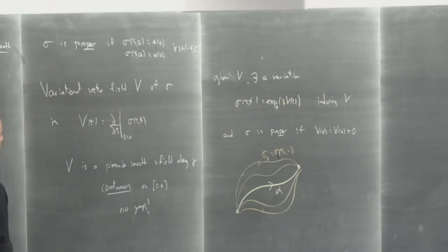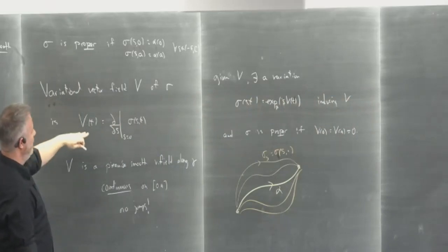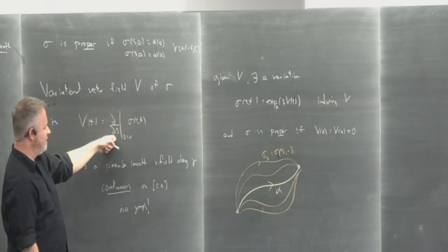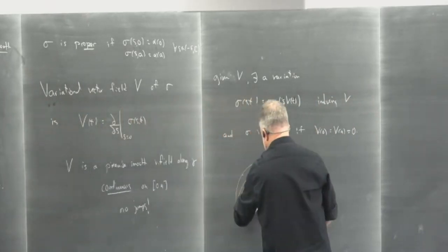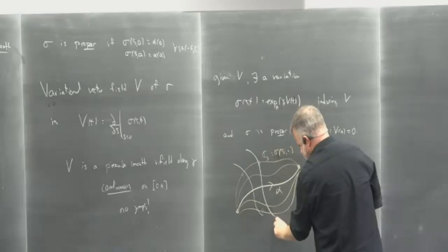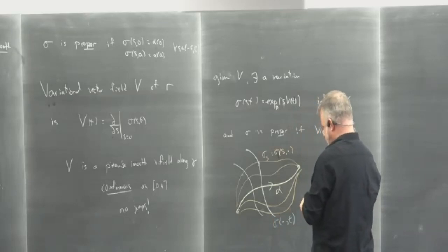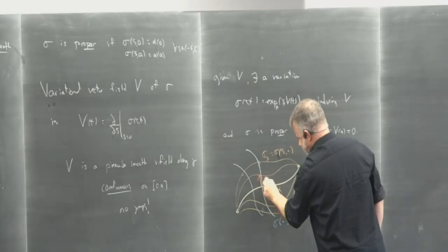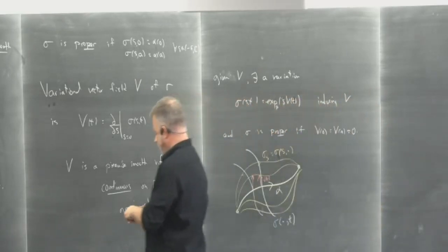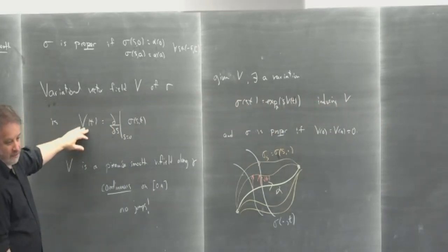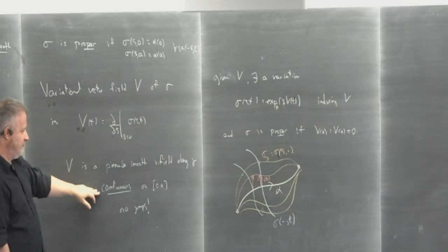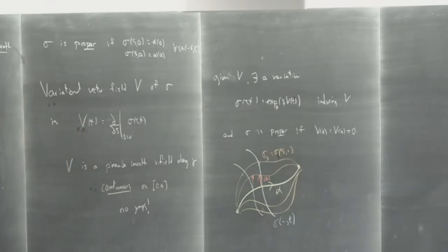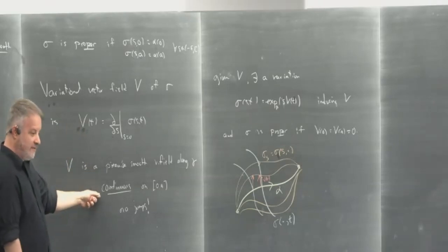Given a variation, we define the variational vector field of sigma: you fix T, think of it as a curve in S — that's a smooth curve in S — and you take D by DS at S equals zero. So the velocity vector of these transverse curves. These blue curves here are the transversal curves. When you take D by DS at S equals zero, this will be V at time T.